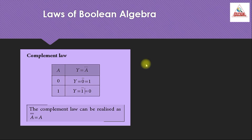Now let us see the laws of Boolean algebra. The NOT, OR, and AND operations are the Boolean operations. The results of these operations are summarized as complement law, OR law, and AND law.